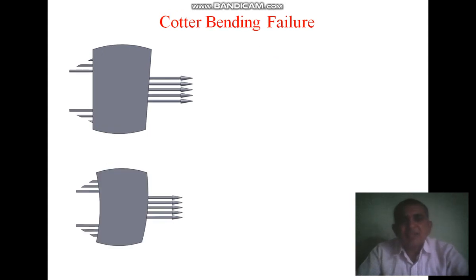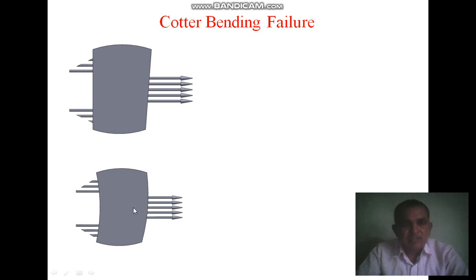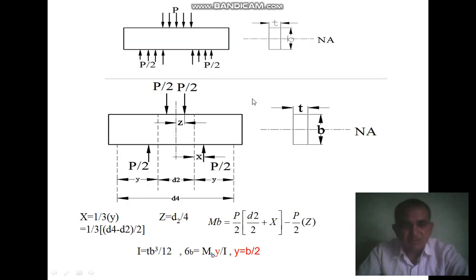The cotter may also fail due to bending failure. Based on the force conditions, bending failure occurs in the cotter. At the two ends, different forces are present — suppose the total force is P, then at each end it is P/2. Due to this, bending occurs in the cotter as shown in the figure. Our aim is to find the free body diagram first, and based on that find the maximum bending stress.